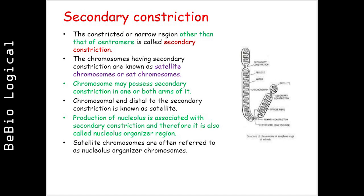The constricted or narrow region other than that of the centromere is called secondary constriction. The chromosomes having secondary constrictions are known as satellite chromosomes or SAT chromosomes. Chromosomes may possess secondary constriction in one or both arms. The chromosomal end distal to the secondary constriction is known as the satellite. Production of the nucleolus is associated with the secondary constriction, and therefore it is also called the nucleolus organiser region, or NOR.